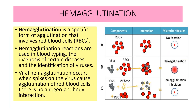The third type is hemagglutination. Hemagglutination is a specific form of agglutination that involves RBCs. Hemagglutination reactions are used in blood typing, the diagnosis of certain diseases, as well as the identification of viruses. Viral hemagglutination occurs when the spikes on the virus cause agglutination of RBCs — there are no antigen-antibody interactions involved. In this diagram, when nothing is added RBCs show no reaction, but when viruses are added to RBCs, the spikes on the viruses cause agglutination — that process is known as hemagglutination.